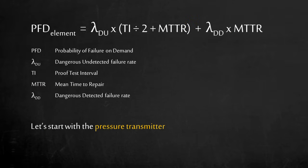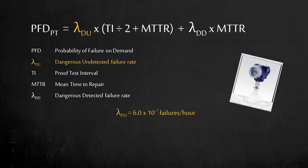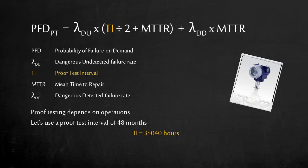Let's try it out on the pressure transmitter, which is our sensor element. The pressure transmitter has a dangerous failure rate of 60 hidden failures per 1 million hours of operation. Proof testing depends on operations. This is crucial and requires commitment from operation and maintenance. Let's say the crew performs a proof test every 48 months. This is to ensure the transmitter can produce the alarm signal in a high-pressure condition. Since all the variable units need to be consistent, we'll convert 48 months into 35,040 hours.